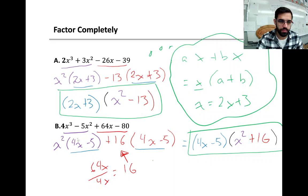Okay, second one, same thing. First two terms have a greatest common factor of x-squared. The second two terms have a greatest common factor of 16. If you factor those GCFs out, we get 4x minus 5 for each of them. We can pull out 4x minus 5, leaving the x-squared plus 16 behind. And we did factor by grouping.